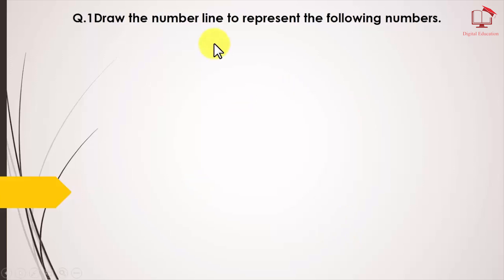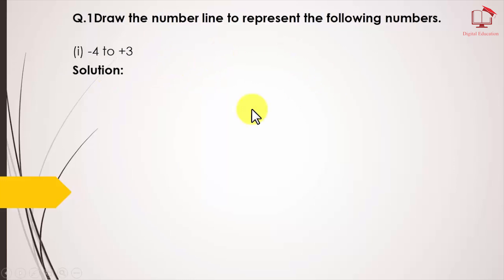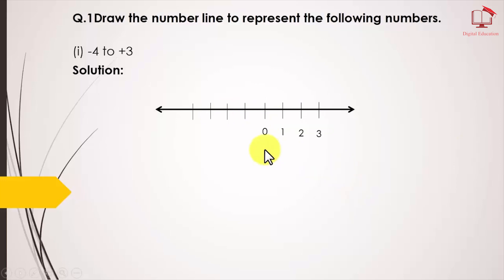Question number 1: Draw the number line to represent the following numbers. Part 1: we have minus 4 to positive 3, and all these numbers we have to show on the number line. Firstly, we will draw a straight line and mark the numbers with equal distances, then assign numbers 1, 2, 3 on the right and minus 1, minus 2, minus 3, minus 4 on the left of zero. All numbers from minus 4 to positive 3 are represented on the line.